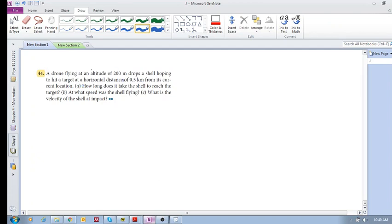Okay, can you imagine what's happening here? So you've got the drone here. There's the drone. And there's a target here. Let's call it X. And it wants to drop a shell so that it hits this target. And we know that that distance is half a kilometer, which is 500 meters. And it's flying at an altitude of 200 meters.